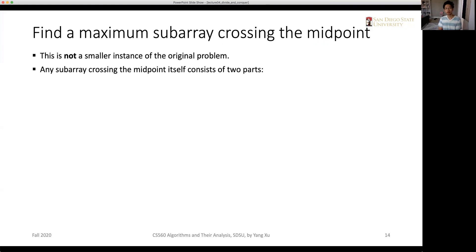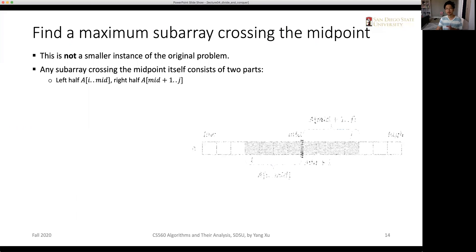And we need to carefully look at the problem. We just mentioned that the sub-array that crosses the midpoint itself consists of two parts. The first part is the left half from index i to mid and the right half from mid plus 1 to j.